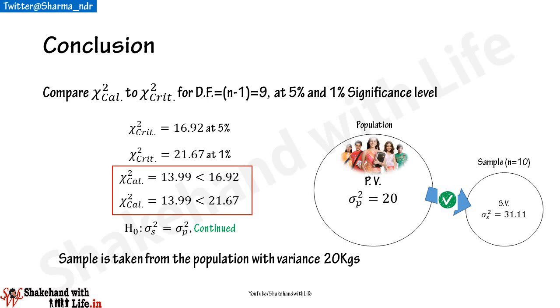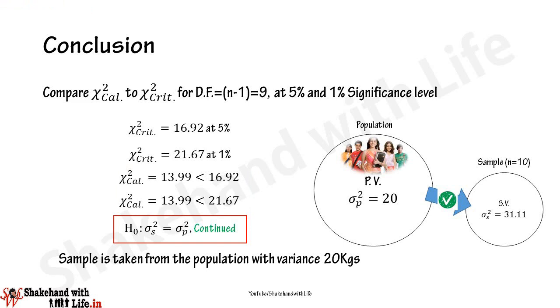Hence, in both cases — at 5% and 1% significance levels — we cannot reject the null hypothesis. We conclude that the variance of the given distribution can be taken as 20 kg², and in simple words, the sample of students is drawn from the school with a weight variance of 20 kg².